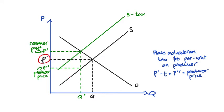After the tax, our consumers pay a higher price here, that's p prime, and the producers now get a lower price p prime prime.